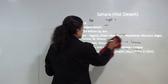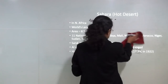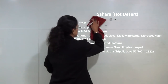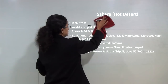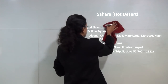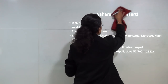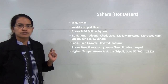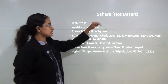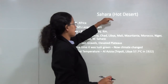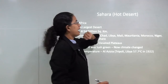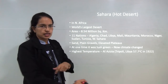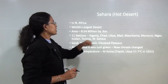Now we will be starting with the case studies. There will be two case studies that we will discuss. One is for a hot desert and the other is for a cold desert. For the hot desert we will talk about the Sahara desert in Africa, and for the cold desert we will talk about the Ladakh desert in India.